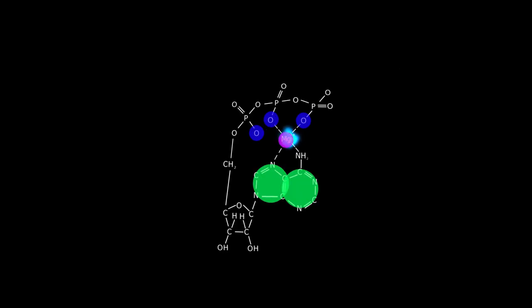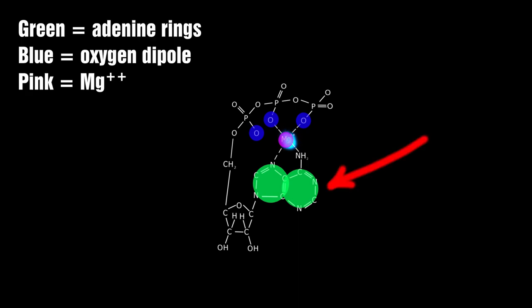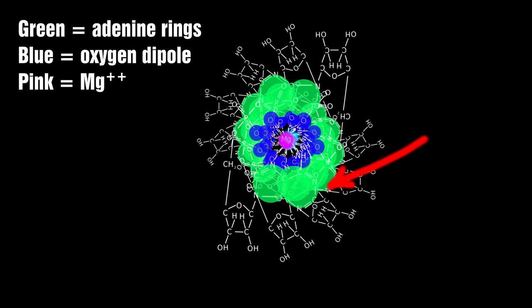An interesting feature we see in this configuration is the location in the adenosine heterocycles. They sit directly on the circumference of the circle formed by the acyl oxygen dipoles and 180 degrees apart from each other.